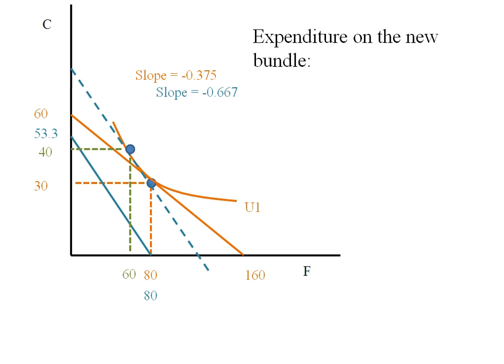Let's calculate the expenditure on this new bundle. Well, the price of food is 6 and the quantity of food is 60. The price of clothing is 9 and the quantity of clothing is 40. We'd be spending 720 dollars on that bundle. So what we're saying is if the prices are 6 dollars and 9 dollars, this consumer would need 720 dollars to stay as well off as they were under the old prices.